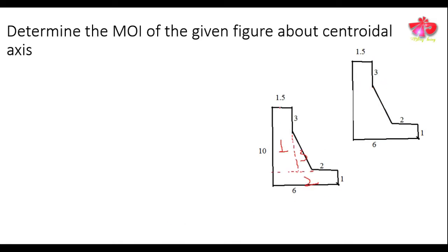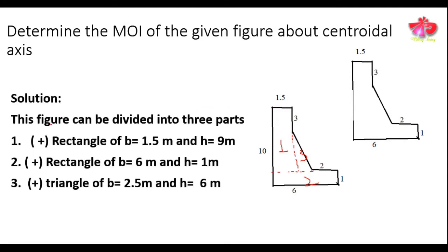We can now write the dimensions of the individual component figures. Section one is a rectangle with base b equals 1.5 m and height equals 9 m. Section two is again a rectangle with base 6 m and height 1 m. Section three is a triangle. The base is calculated as: total 6 minus 2 minus 1.5, so base equals 2.5 m, and height equals 6 m.